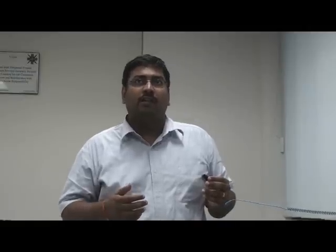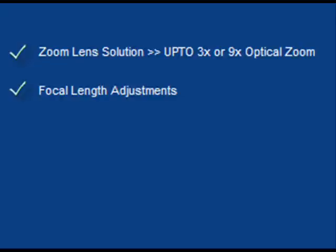For those who might be wondering why we do not go for the standard cell phone type fixed lens camera module and why we go for these kinds of solutions — there are four reasons. Number one: customers need a zoom lens solution. They would like to go for an optical zoom lens for 3x or 9x zoom.